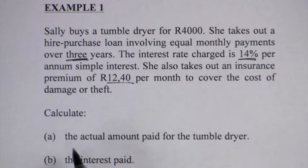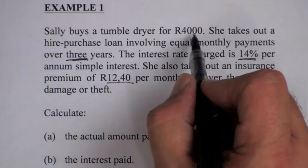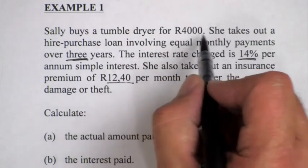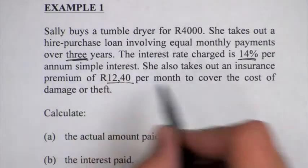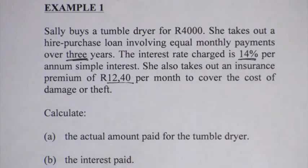Now, the first question says calculate the actual amount paid for the tumble dryer. Please, that is not 4,000 Rand. If she bought it for cash, that would have been the actual price of the tumble dryer. She is going to take out a three-year loan at 14%. So what will she finally pay for it?